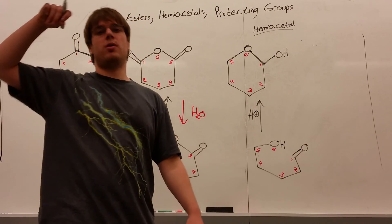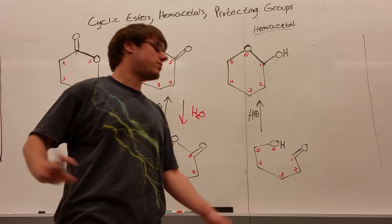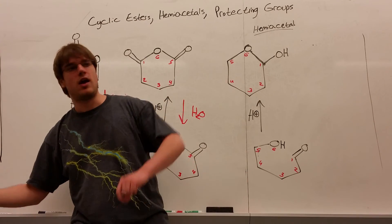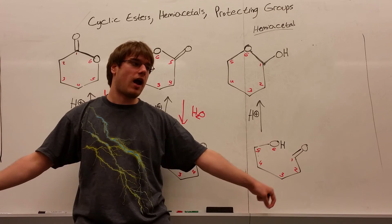So the way you make a hemiacetal is you have a carbonyl on one end, you have a carbonyl on one end and then just an OH on the other. And when they form a ring, you end up making a hemiacetal.